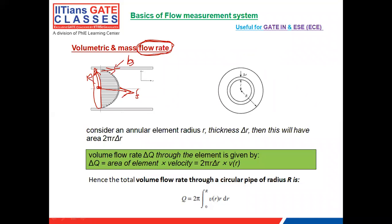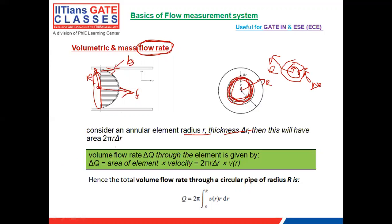To calculate the volumetric flow rate, we take a small annular region. If you take a small annular area and calculate how much fluid flows through it, you can integrate over the full radius R. The small annular element has radius r from the center and thickness Δr.